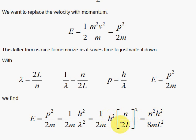And we get n squared h squared over 8mL squared in the denominator. And what we have here is a quantization of energy. We simply have quantized the wavelength, which in turn quantizes the momentum, which in turn quantizes the energy.